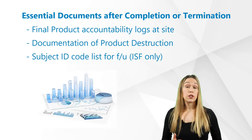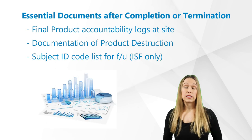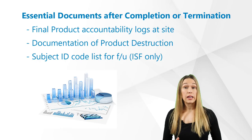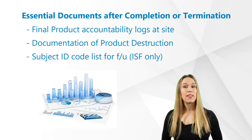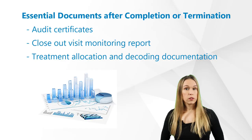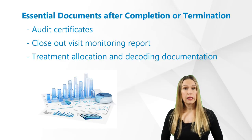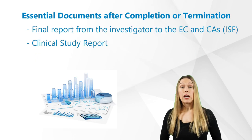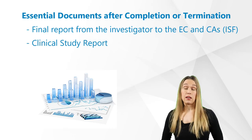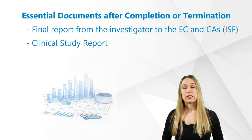After completion or termination of the trial, these are the documents you need: the final product accountability log at the site; documentation of product destruction; subject ID code list for follow-up — again, this is ISF only; audit certificates if audits were performed; close-out visit monitoring reports; treatment allocation and decoding documentation; final reports from the investigator to the ethics committees and CAs — these belong in the ISF; and finally, the clinical study report.